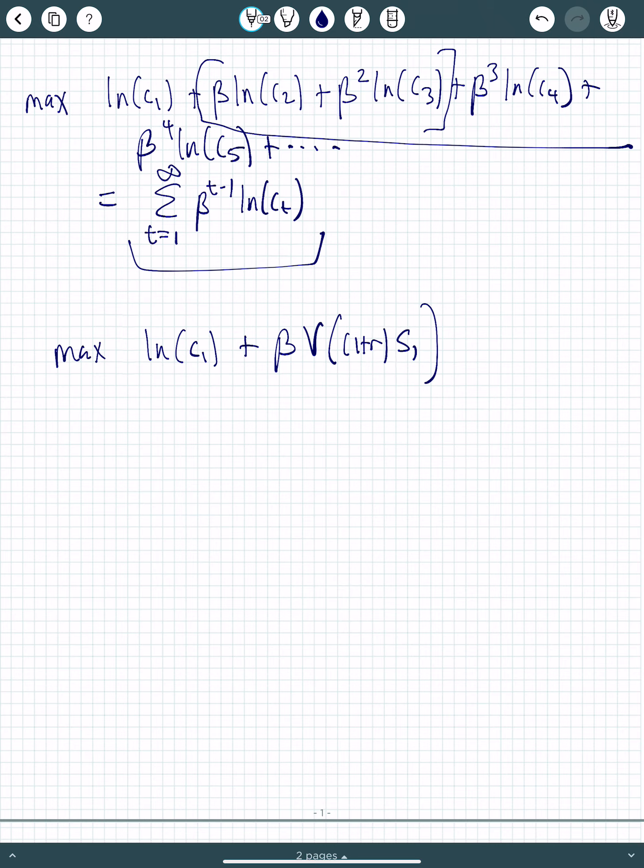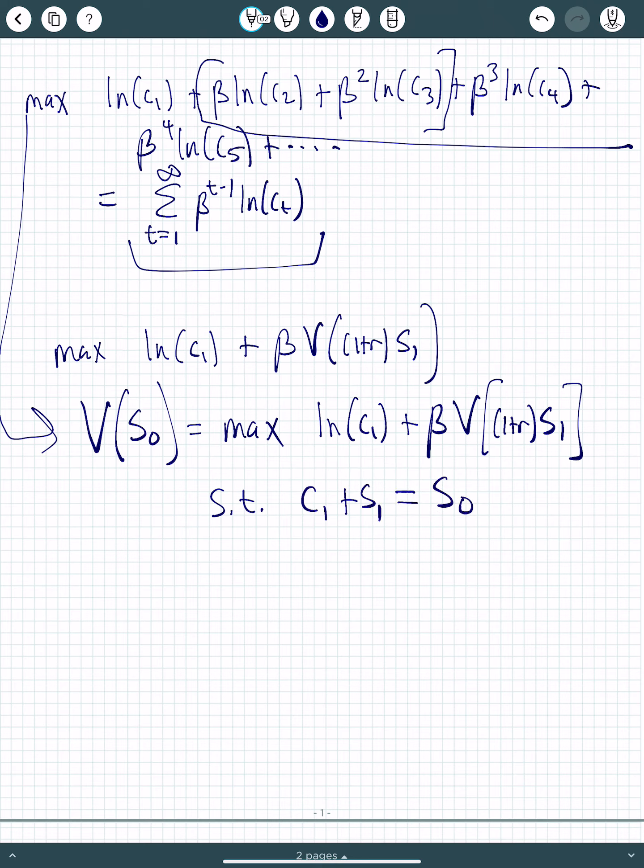And in fact, we can do that for the infinite period problem. Nothing is going to change. So I could take the infinite period problem and write it as, if I start with some savings s0, that's like our a1. Maximize my current consumption plus beta times v. And I'm going to start with 1 plus r times s1. This is subject to my current consumption plus s1 equal to s0.